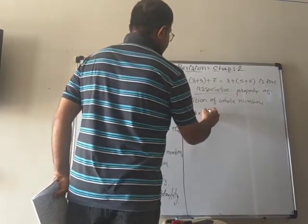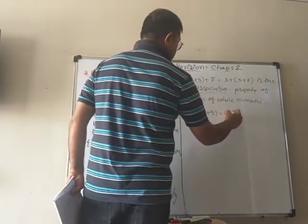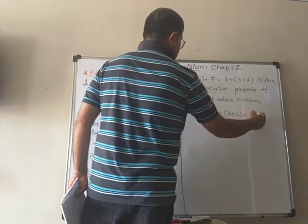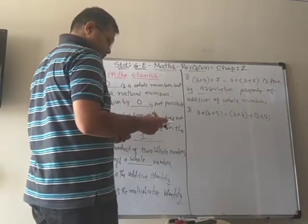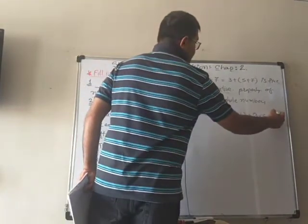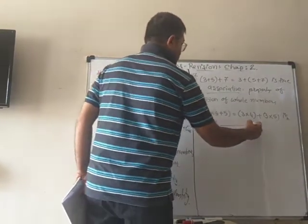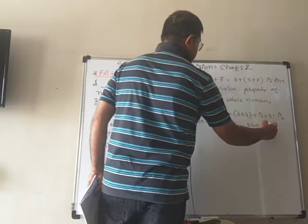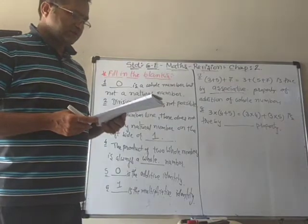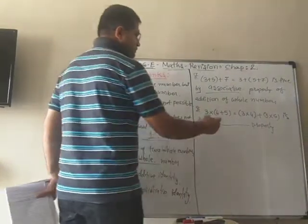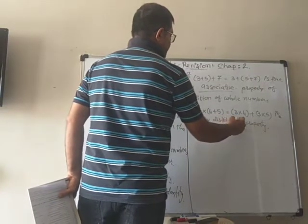4 plus 5 is equal to 3 multiplied by 4 plus 3 multiplied by 5 is true by which property? That is the distributive property.